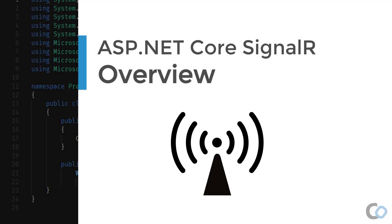What exactly is ASP.NET Core SignalR? It's a library that simplifies adding real-time web functionality to apps. Real-time web functionality is having the server-side code push content to clients like a browser instantly. I'll cover this more in the next few sections by describing the problem space and how SignalR solves it by pushing content to clients.